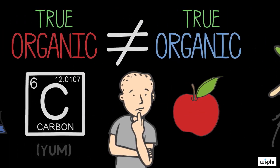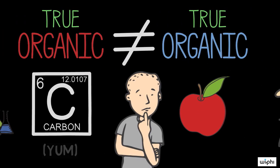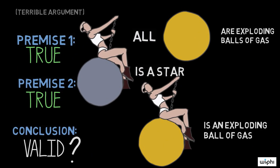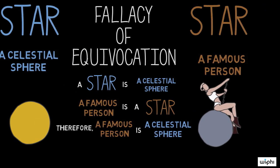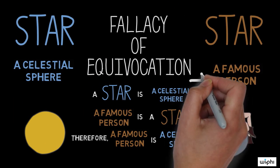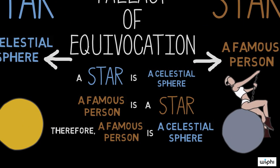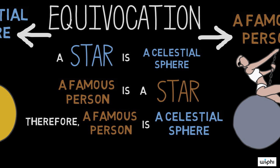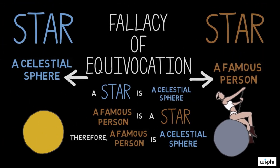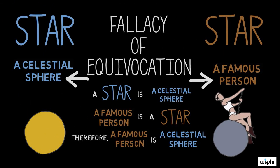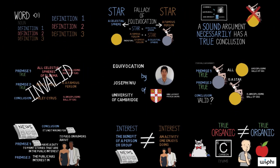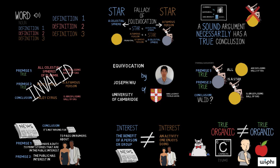If you're ever suspicious that an argument is guilty of equivocation, try the method we used in the first example. First, distinguish the potential meanings of the ambiguous term in an argument. Then, restate the argument without the ambiguous term, so that the premises are still true. Finally, evaluate the translated argument — is it valid? If not, then the argument has committed the fallacy of equivocation.